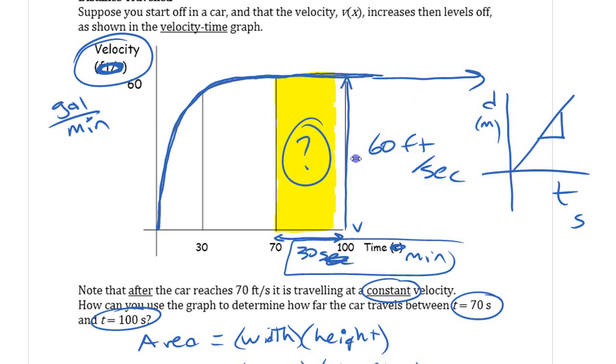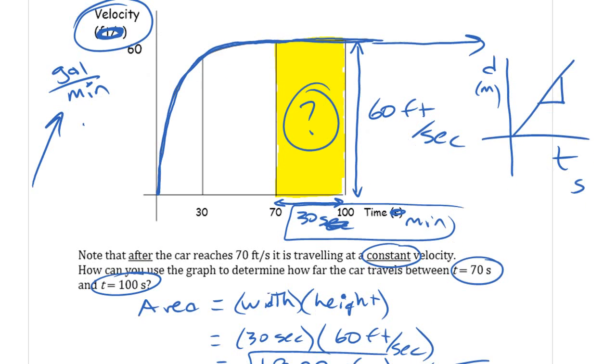So whatever it is, whatever this is the rate of, the area represents the net change in that quantity. Even if the area is not a nice geometric figure to work with like this one.